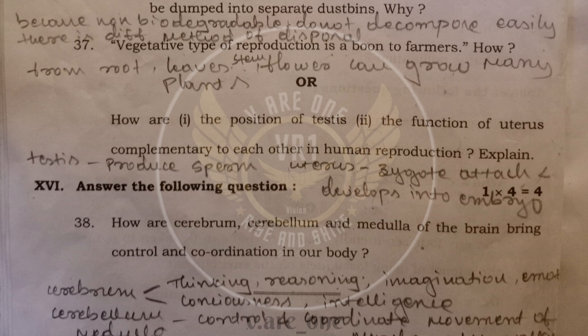Thirty-seventh, vegetative type of reproduction is a boon to farmers. How? In vegetative reproduction, we use root, stem, leaves, flower, any part of the plant to regrow it. We can grow, from one plant we can grow many plants. So it helps for the farmers. Next, we have option.